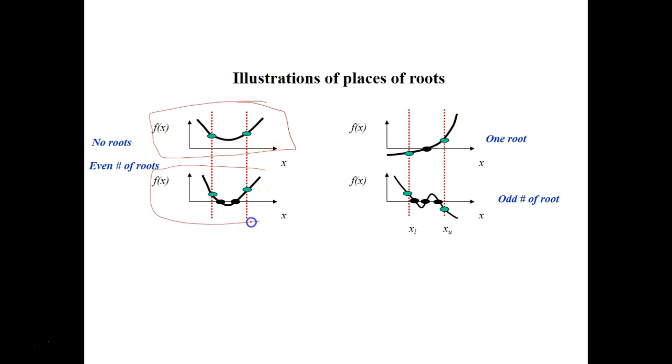So for the second one, for the second type, you can see that the fx is intersecting with the x-axis. And you can find there are two roots here. We call it an even number of roots, two roots. And for this one, there is only one root. And for the fourth case, we have odd number of roots. So in this case, we have one, we have two, we have three. Three roots for this function.